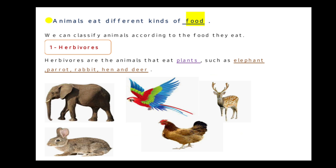Animals eat different kinds of food. So we can classify animals according to the food they eat.